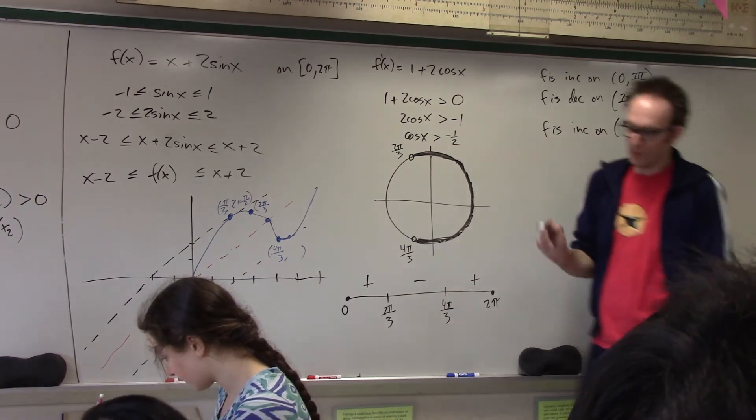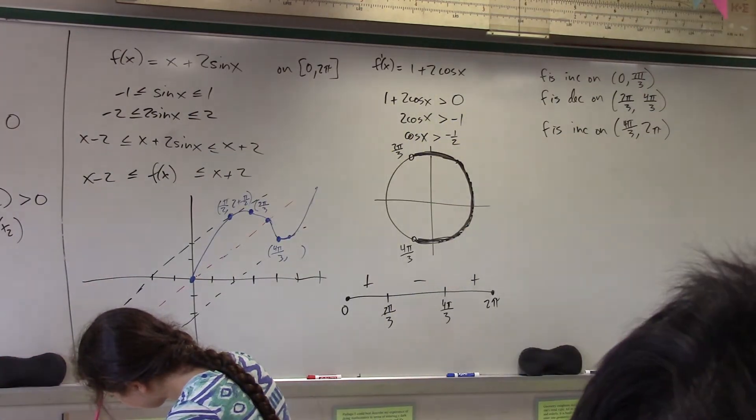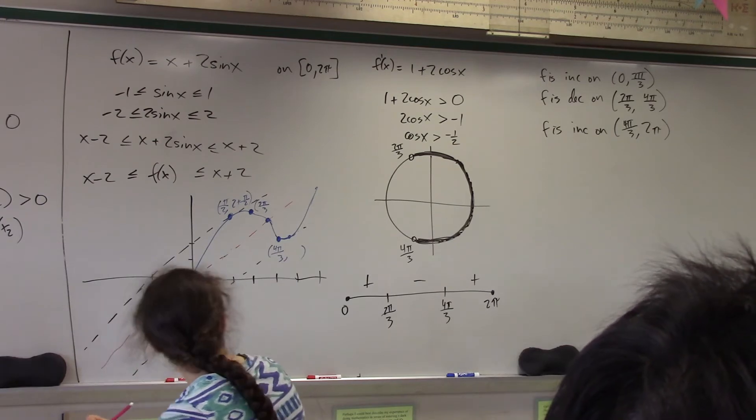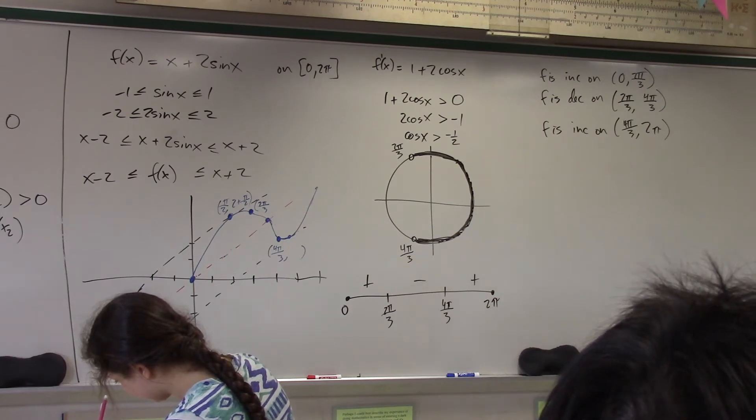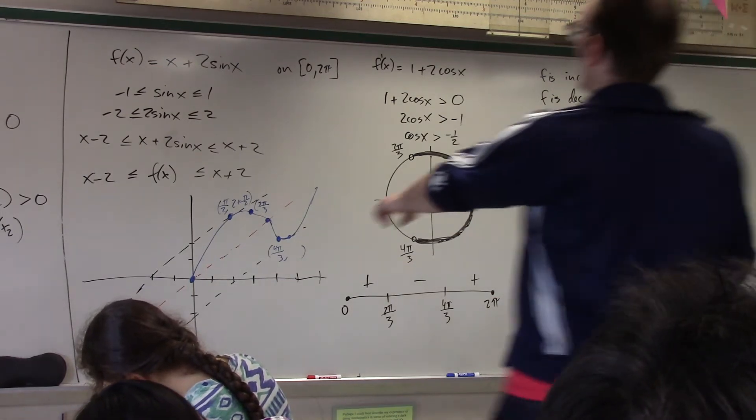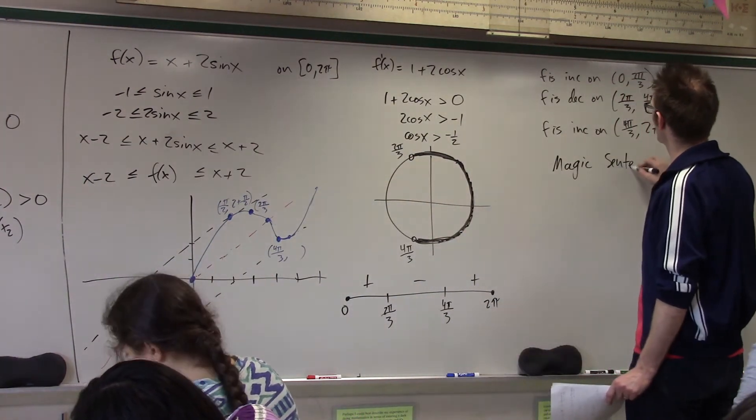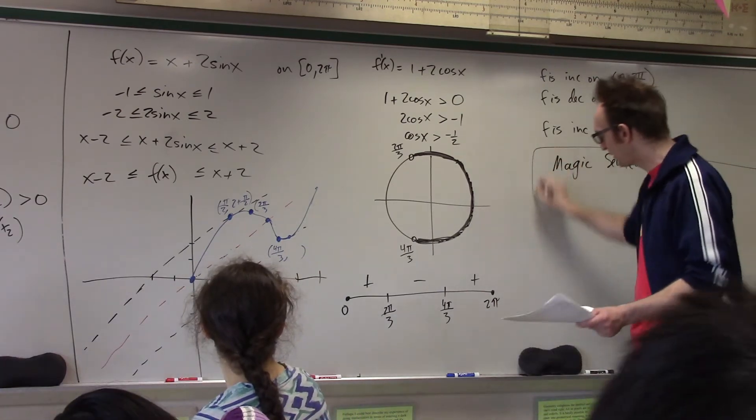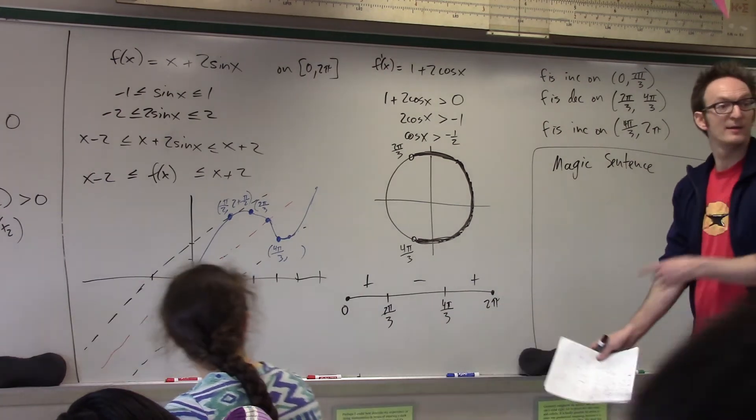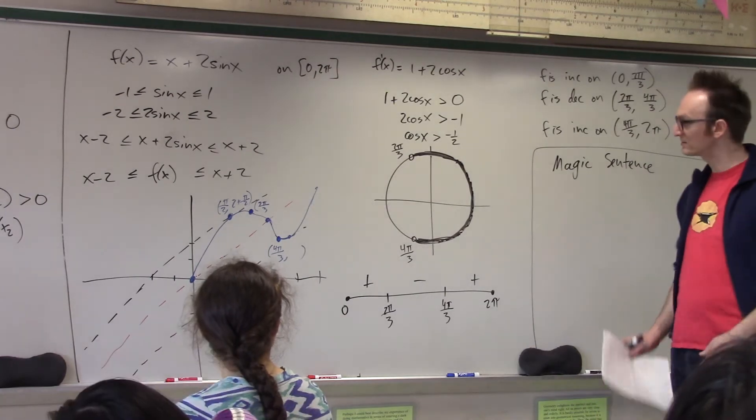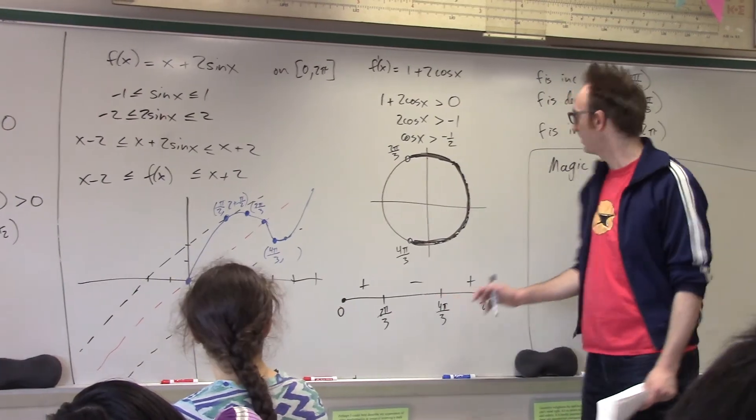And most importantly, I know that I have some relative minima and relative maxima. Where does this function have a relative max? At 2 pi over 3. All right, so there's a magic sentence, and the magic sentence is the sentence that you must use whenever you want to argue that a function has a relative max or relative min. And the magic sentence invokes the first derivative test. And so basically, what we want to say is, yo, the derivative changes sign.